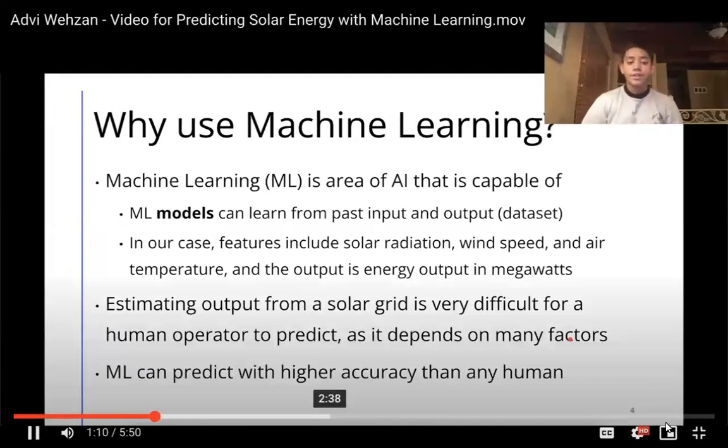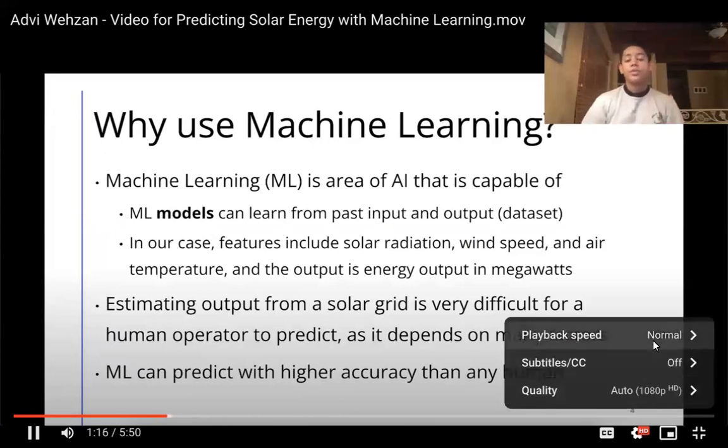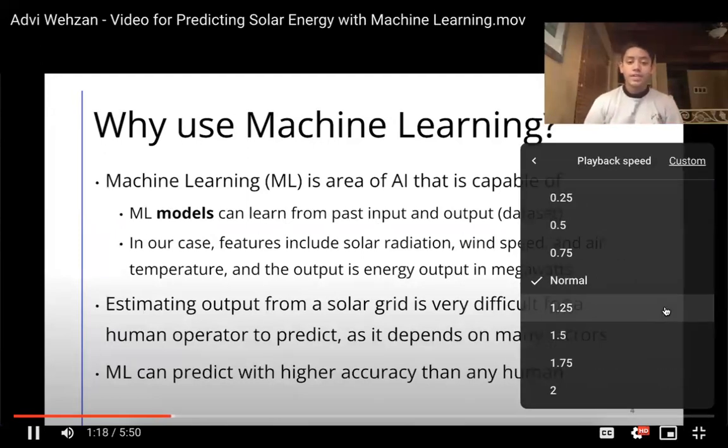In our case, these features or types of data are going to include things like solar radiation, wind speed, and air temperature. Our output that we will be measuring is the predicted energy output.